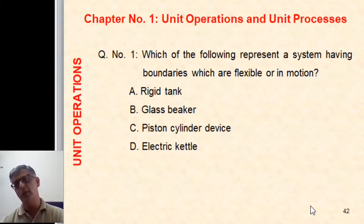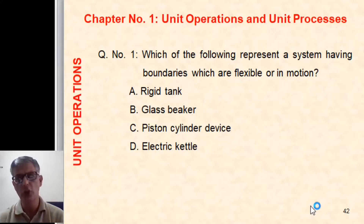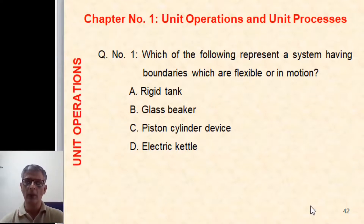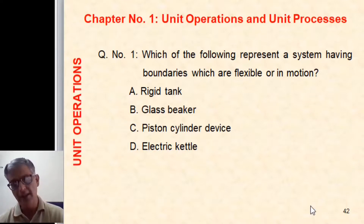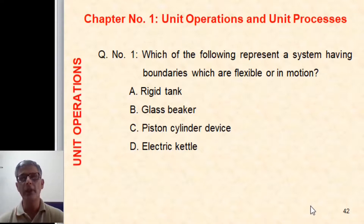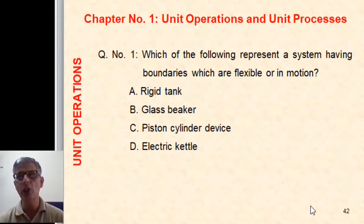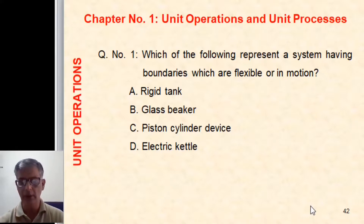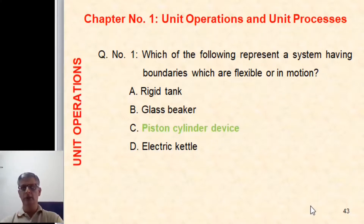Question one: which of the following represents a system having boundaries which are flexible or in motion? Choices are: a rigid tank, a glass beaker, a piston-cylinder device, or an electric kettle. In the case of a rigid tank, glass beaker, and electric kettle, all have rigid boundaries that are not flexible. In a piston-cylinder device, the piston can be moved in or out of the cylinder, so the piston-cylinder device is the correct answer.